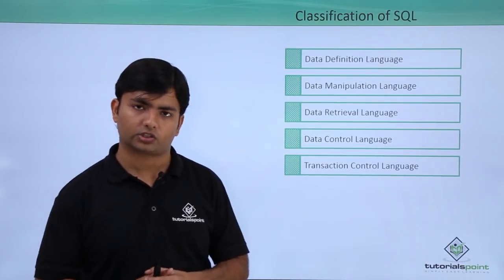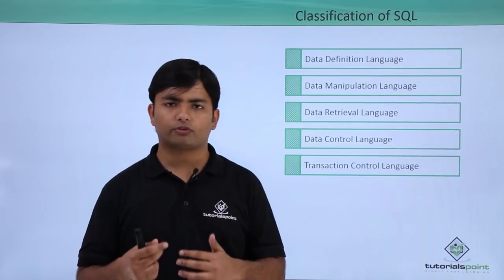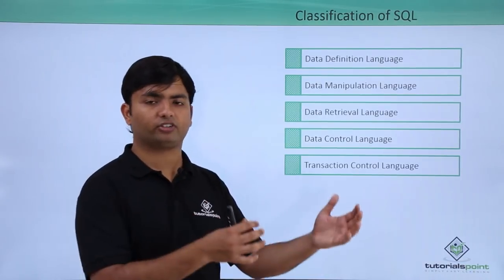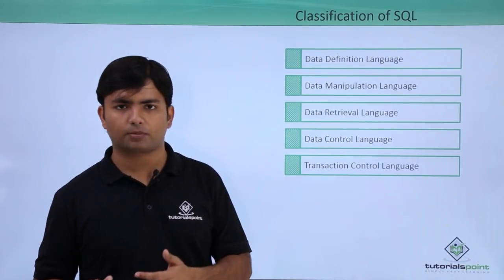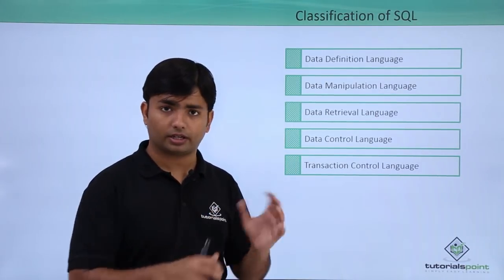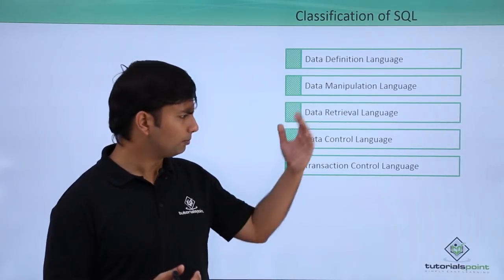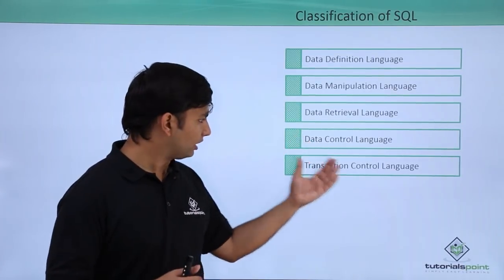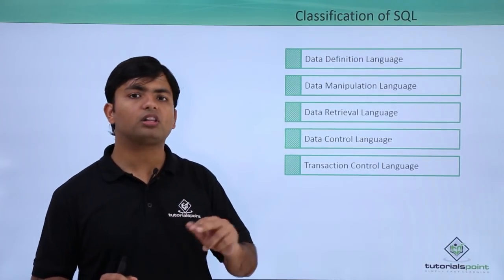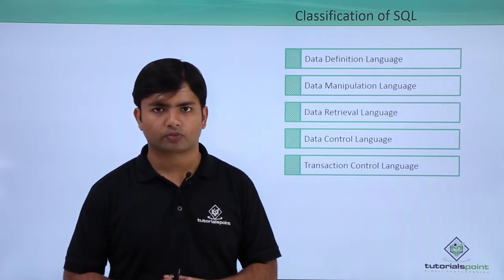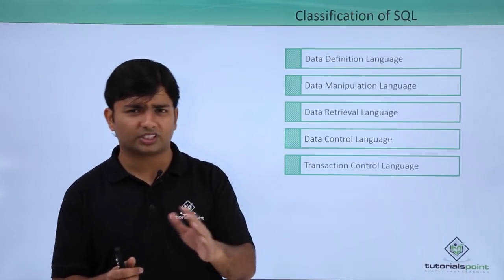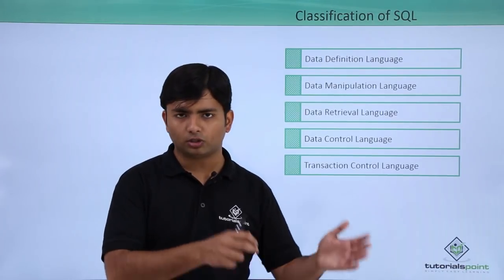Transaction Control Language ensures the integrity of transactions when executing multiple SQL statements together. For example, when transferring an amount from one bank account to another, there are a couple of SQL statements involved: first deducting from your account, then adding to your friend's account. TCL ensures that if everything is successful, all commands in the transaction execute successfully; otherwise, if something goes wrong, the whole transaction is rolled back. Either the transaction is fully successful or fully failed — not partially.